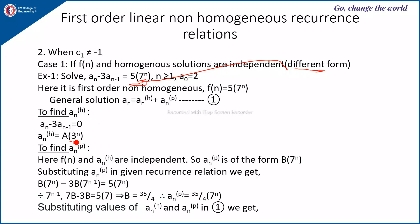Since 7 and 3 are different, we say the forms are different, and therefore f(n) and the homogeneous solution are independent. So the particular solution a(n)^(p) is of the form b·7^n, where 7^n comes from the f(n) form.